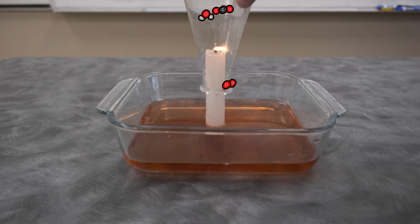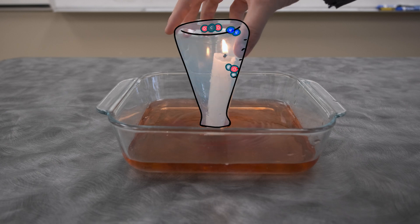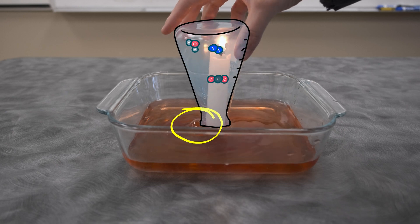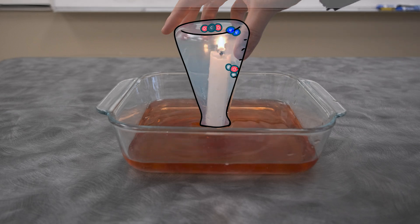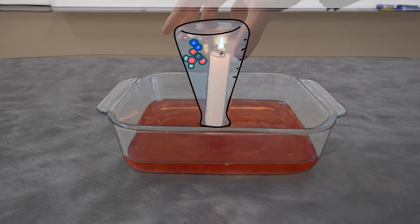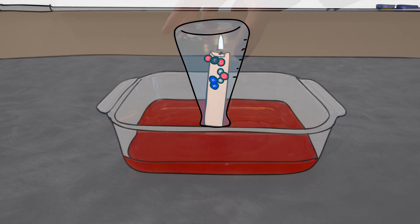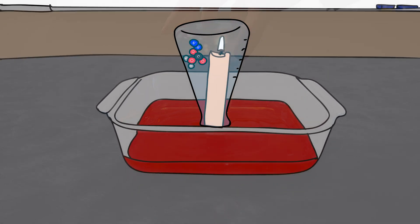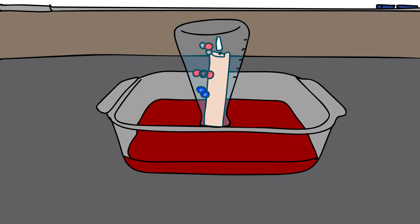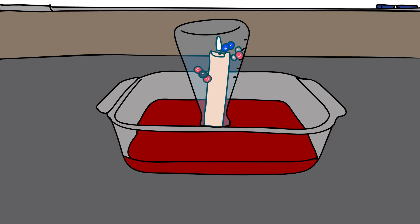As soon as we put the beaker over the top, that hot air starts to become trapped — you can see it escaping right here. At this moment, the water creates a seal at the bottom of the flask, meaning no new oxygen can enter. As the combustion reaction consumes the remaining oxygen, the rate of reaction starts to go down. So the hottest the gases inside the Erlenmeyer flask are is that first moment right after the seal is created. From this point on, the gases inside are going to start to cool as the flame goes out.